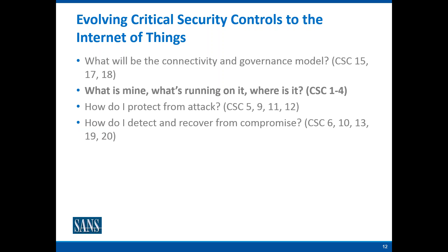Across those controls, there are four critical groupings for extending security out to the Internet of Things. First, how will these things connect to my enterprise and how will they be governed? That includes IT-OT integration — things managed by manufacturing or not managed at all, now being tossed to IT. The governance model for things on the manufacturing floor within the power plant is changing and needs to be integrated with the model we've used for corporate PCs and employee-owned devices. Really critical is visibility — the basic security hygiene of knowing what's on my network, what I own and control, whether it's vulnerable, and what to do about it.